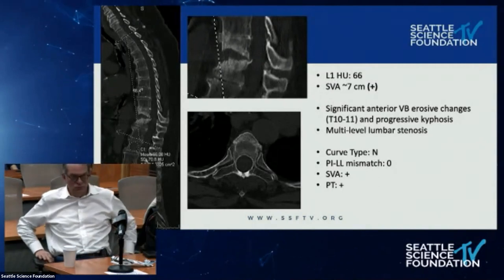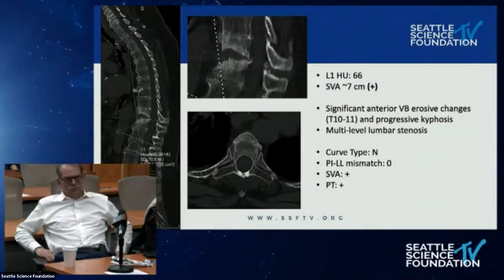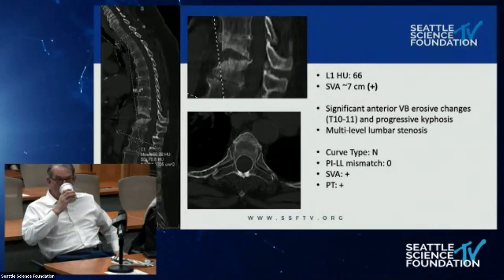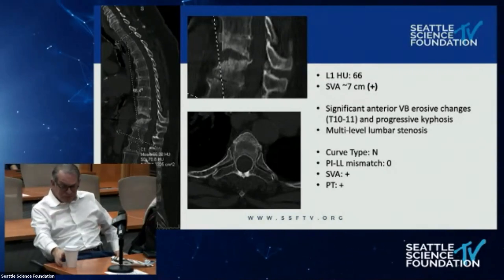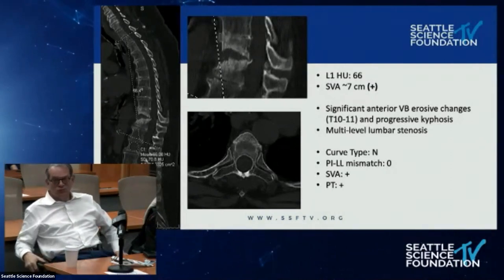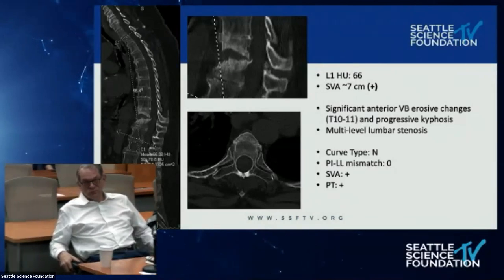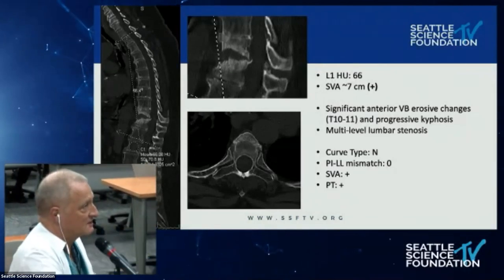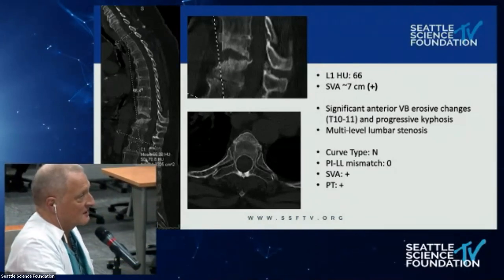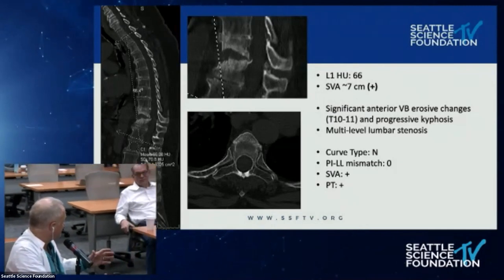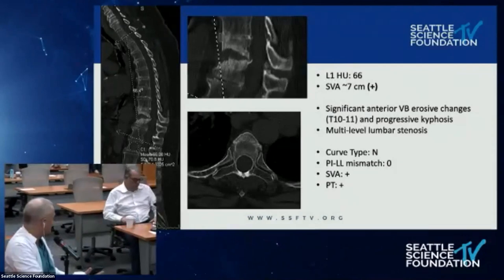Final question before the last case: Chapman references a landmark paper by Hart on upper versus lower thoracic fixation in long fusion constructs and patient-related outcomes. As a surgeon about to see clinic patients, what should they be told about differences in outcomes and impact on life between lower thoracic and upper thoracic fusion constructs?